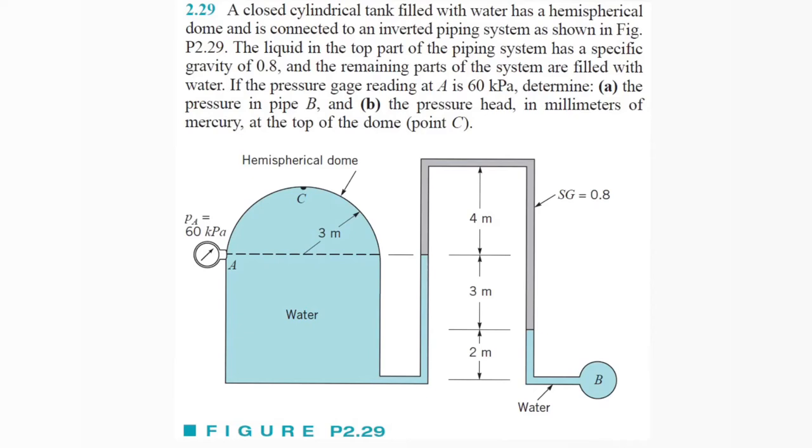All right, so we got another problem. This one's another manometer. We got a closed cylindrical tank filled with water with a hemispherical dome connected to an inverted piping system. The liquid at the top of the piping system has a specific gravity of 0.8, and the remaining parts of the system are filled with water. If the pressure gauge reading at A is 60 kilopascals, determine (a) the pressure in pipe B and (b) the pressure head in millimeters of mercury at the top of the dome, point C.